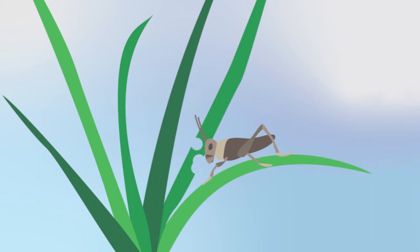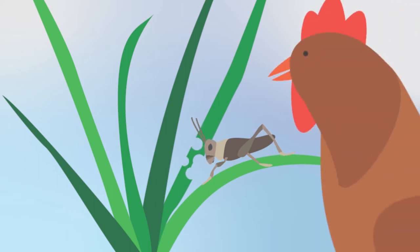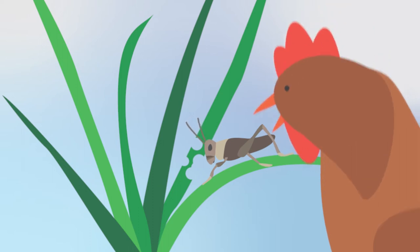Carbon moves throughout the biosphere by traveling through the food chain. Animals feed on plants and then get eaten by bigger animals.